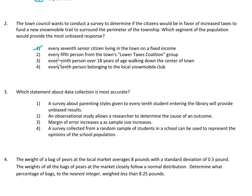Choice two — every fifth person from the town's lower taxes coalition group — is again a specific group; asking only one group creates biased results. Choice three — every ninth person over 18 years of age walking down the center of town — is probably our answer, because you're randomly picking every ninth person over a broad age range. Choice four — every tenth person belonging to the local snowmobile club — is a club and creates unfair results. So choice three is our answer.